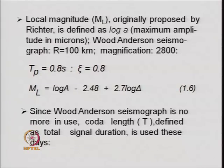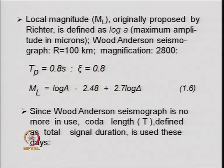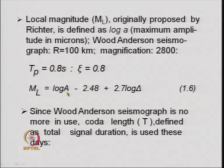There are many varieties of magnitude depending upon waves and quantities being measured. Local magnitude was originally proposed by Richter and is defined as the log of the maximum amplitude measured in microns. For measuring this maximum amplitude, the Wood Anderson seismograph is used, placed at a distance of 100 kilometers from the epicenter. The relationship between local magnitude and the amplitude of ground motion is given by an equation where delta represents the epicentral distance.